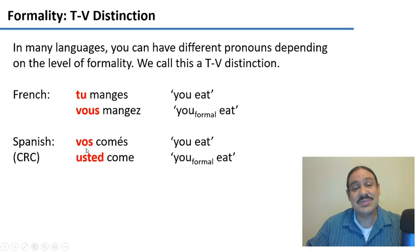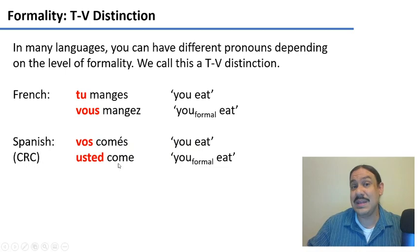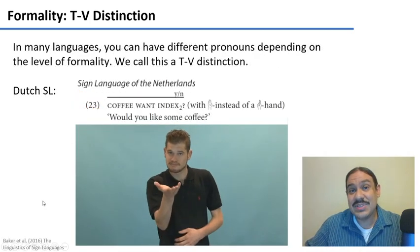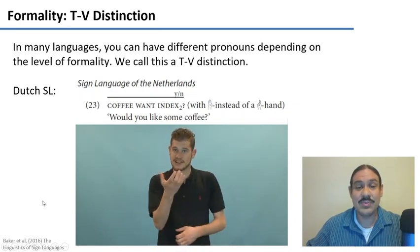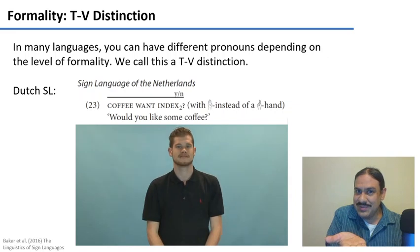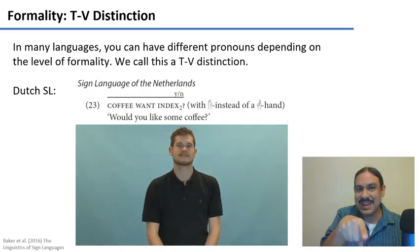Spanish has the same distinction: 'vos comés' and 'usted come.' 'Vos' is with friends, and 'usted' would be with your boss, a professor, or someone you're just meeting. Sign languages can also have these distinctions — in the sign language of the Netherlands, 'Would you like some coffee?' uses a formal pronoun, while the informal version uses a pointed hand.